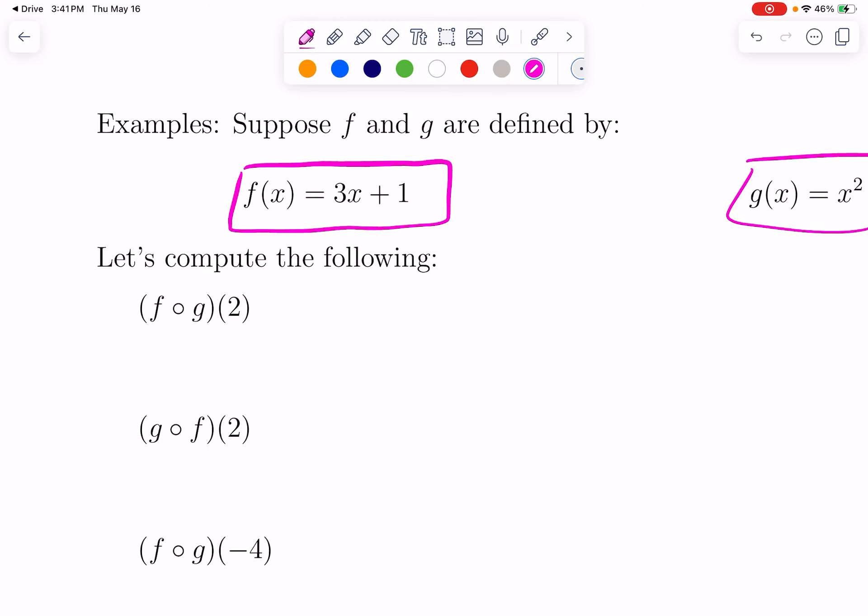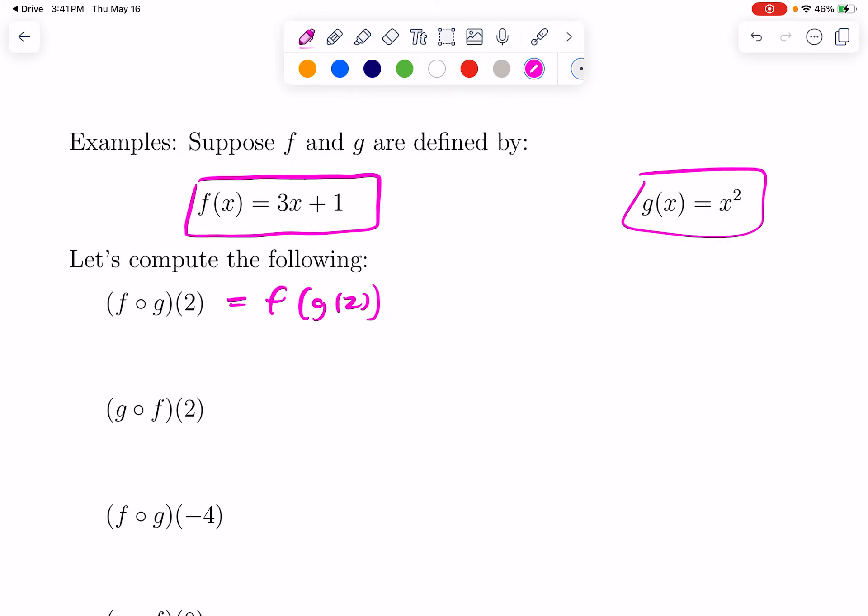So let's just look at some examples. Suppose that the function F is 3X plus 1 and the function G is given by the rule X squared. So F circle G of 2 means F of G of 2. This is just our symbol for do the functions back to back.